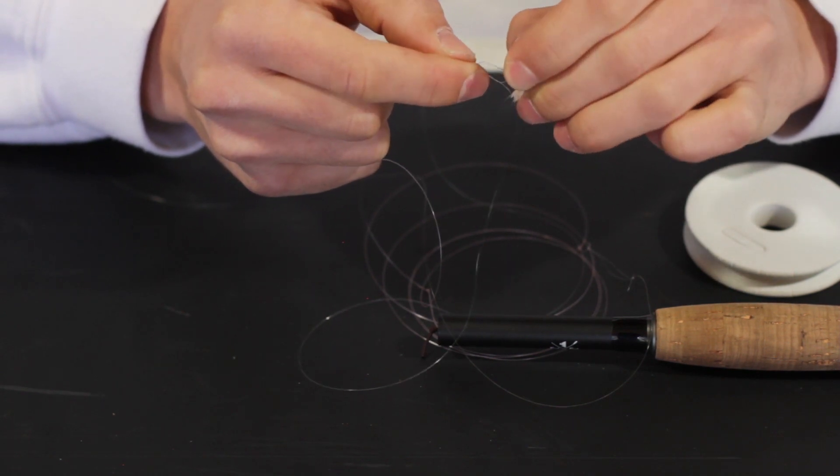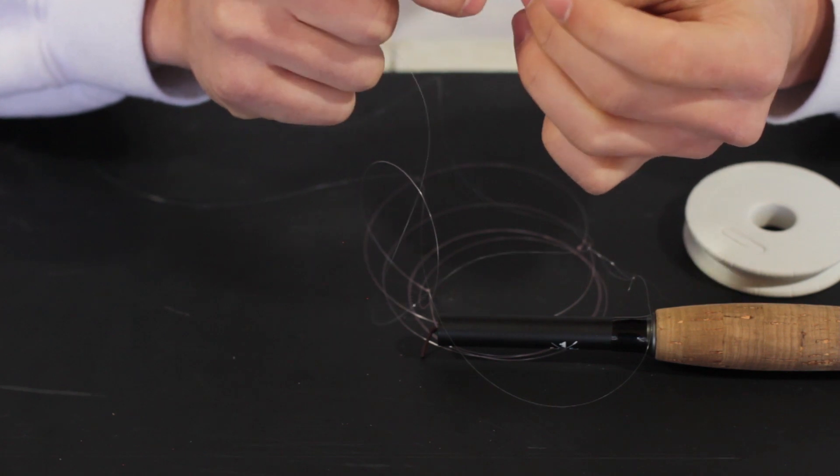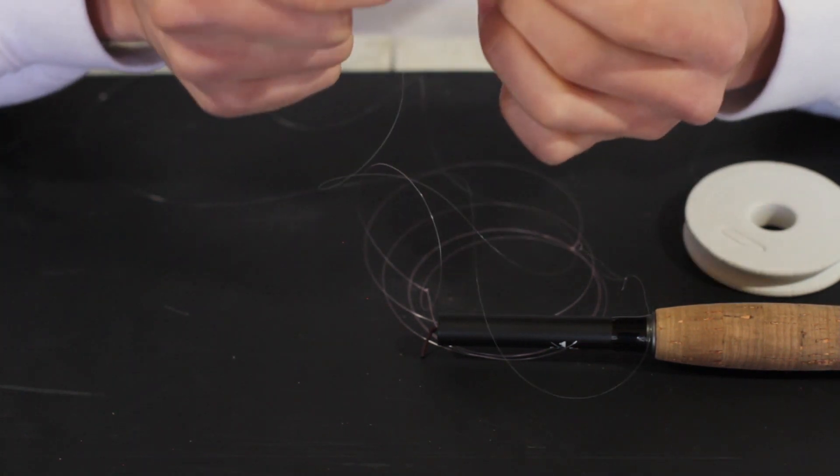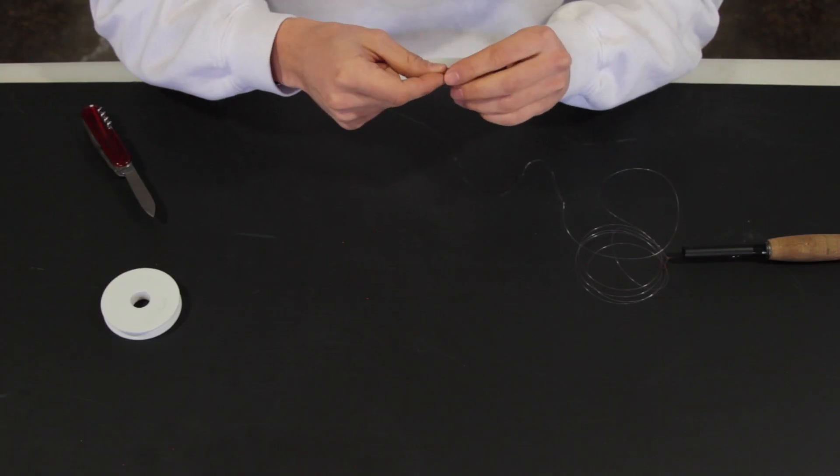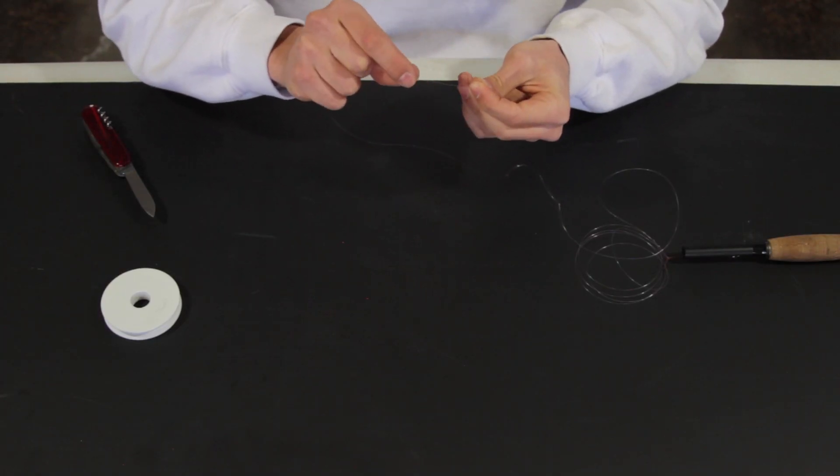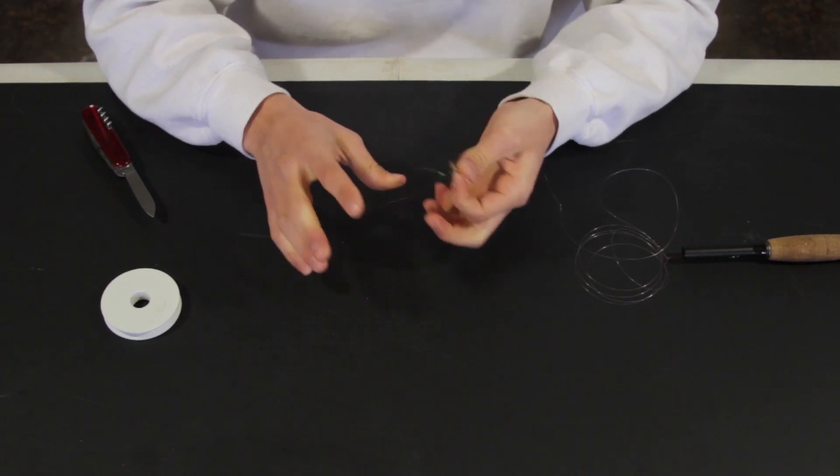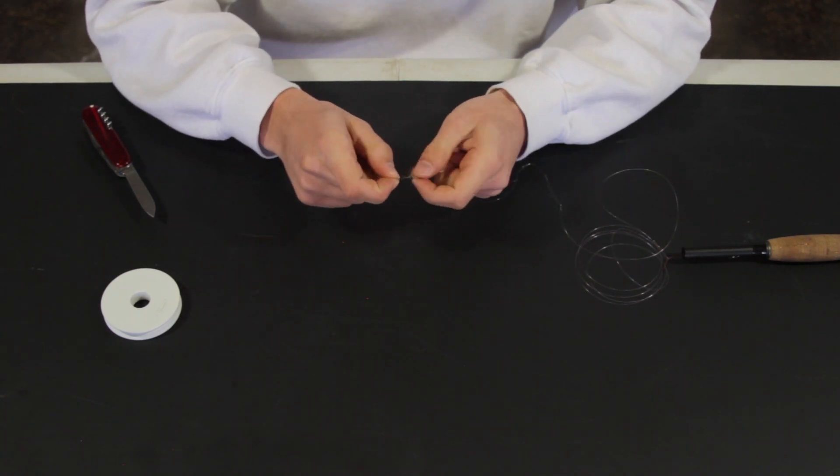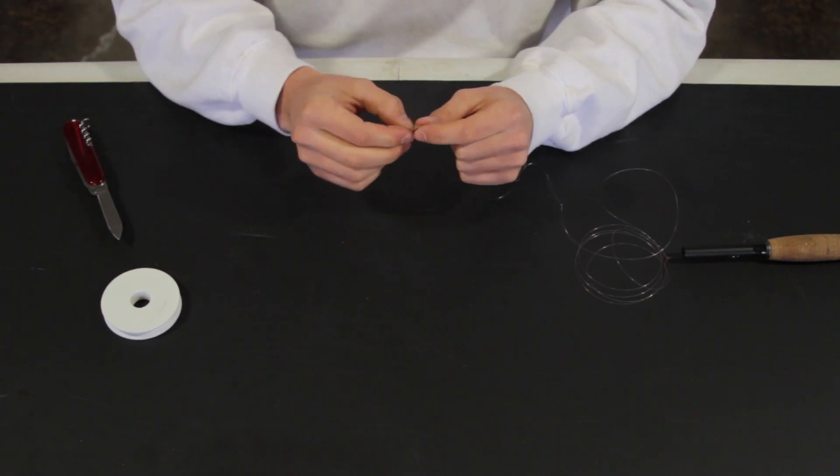And then what I'm going to do now is just lick it real quick. Because when you cinch this knot up together, that tippet, when it heats up, it gets brittle and it loses its elasticity. So if you lick it, it just keeps it from heating up when you cinch it down. And then again, just take this little bit, cut it off, and that's your setup.